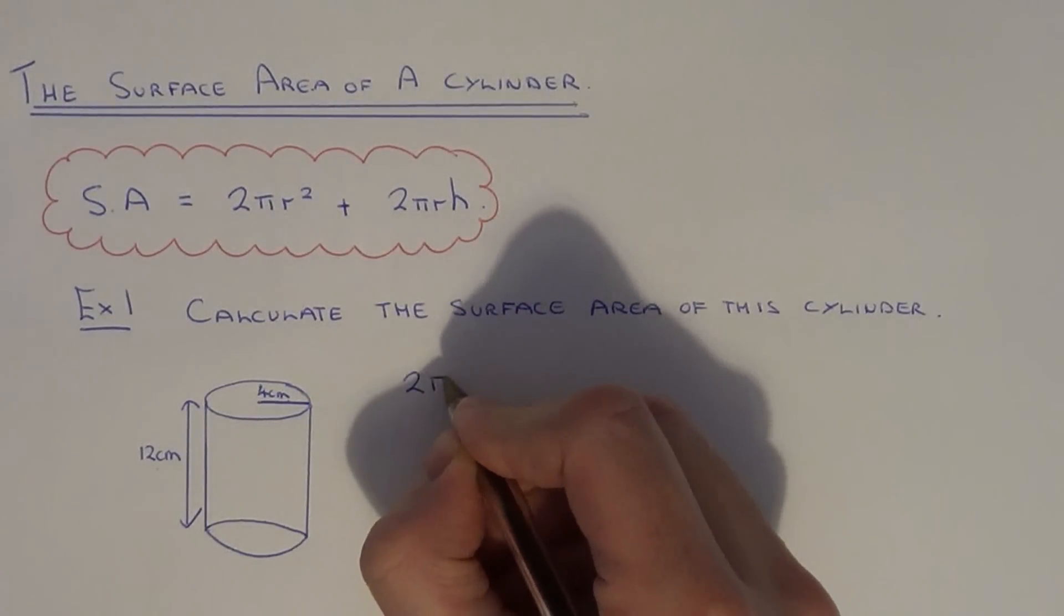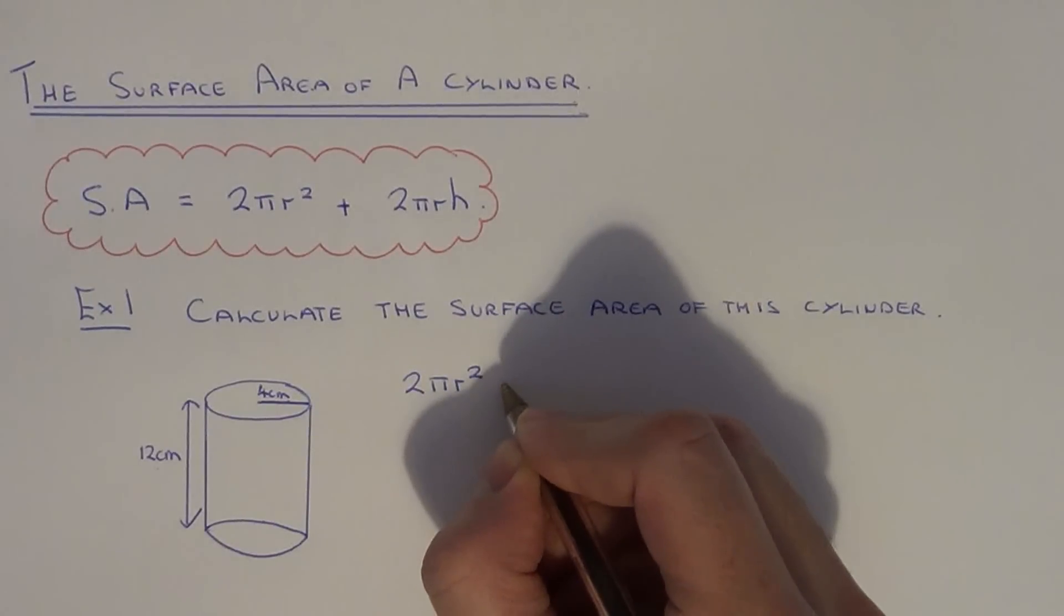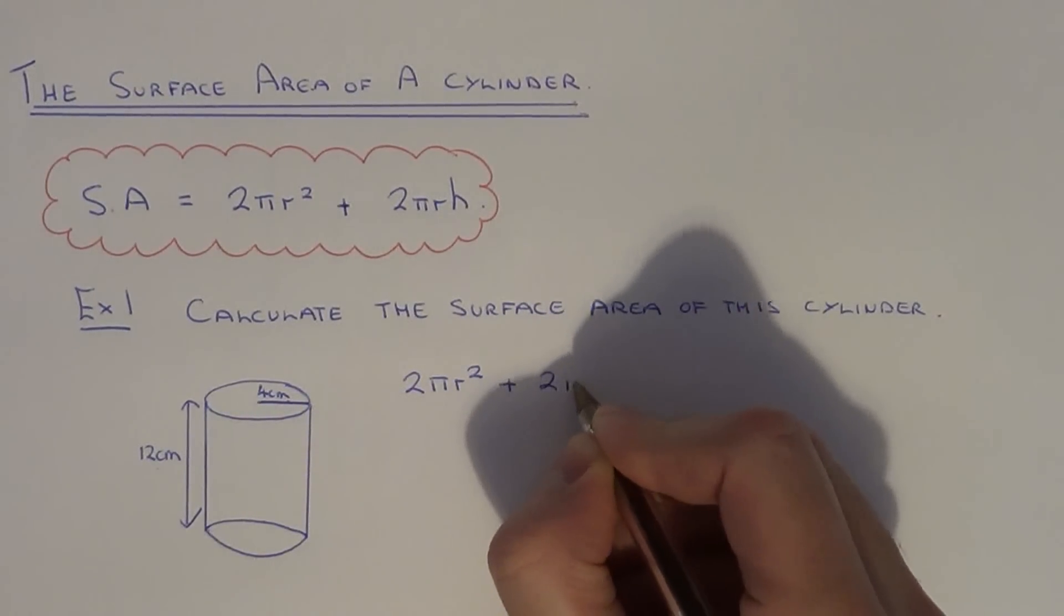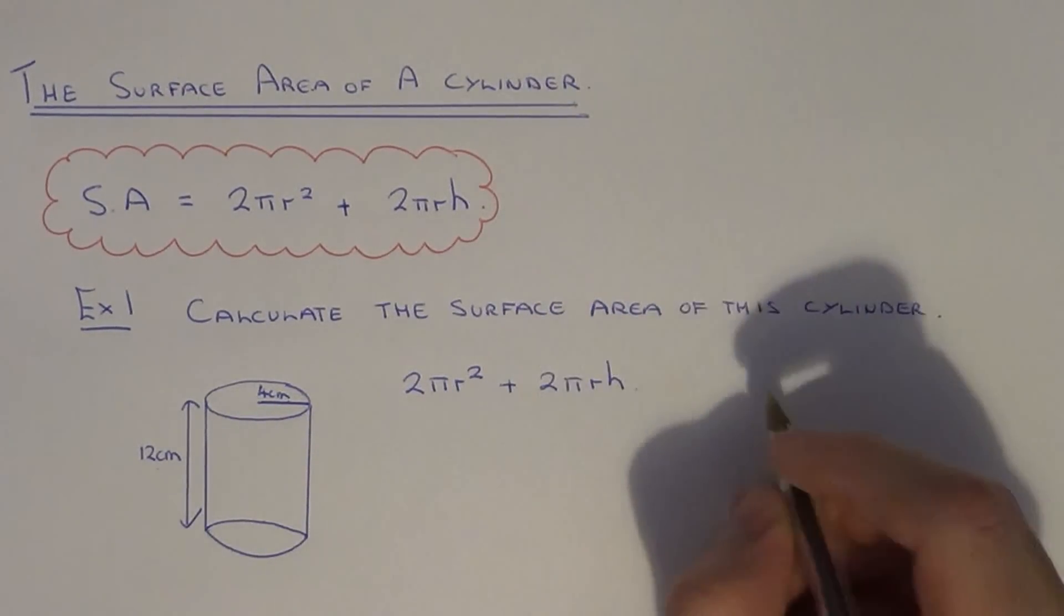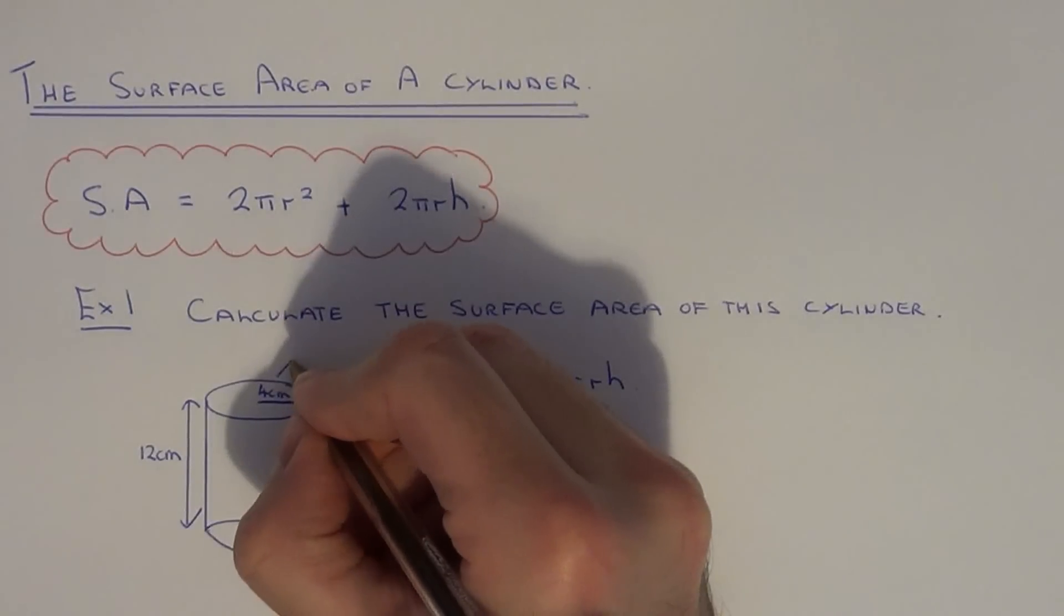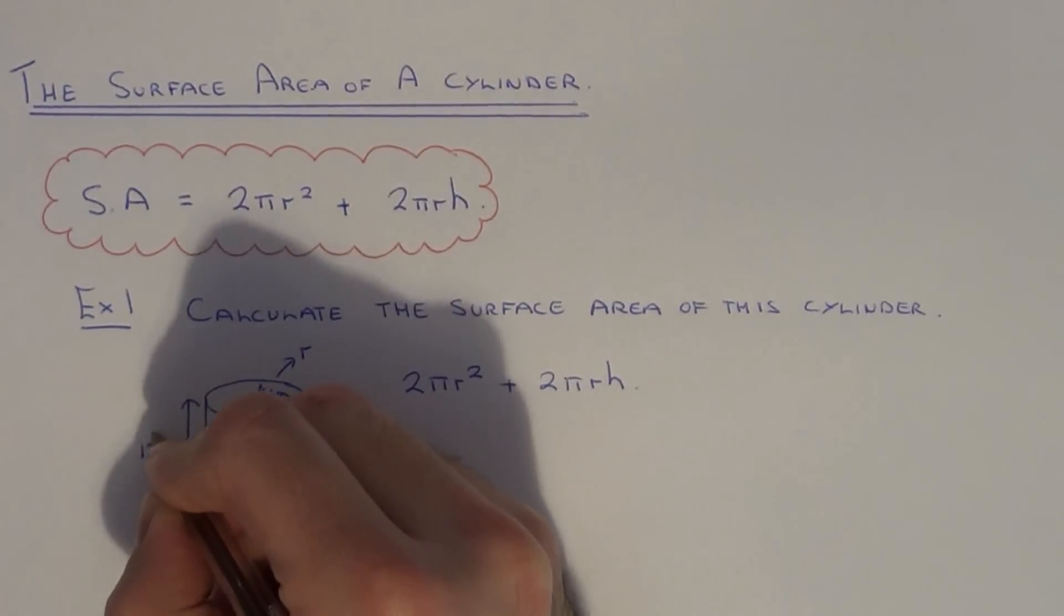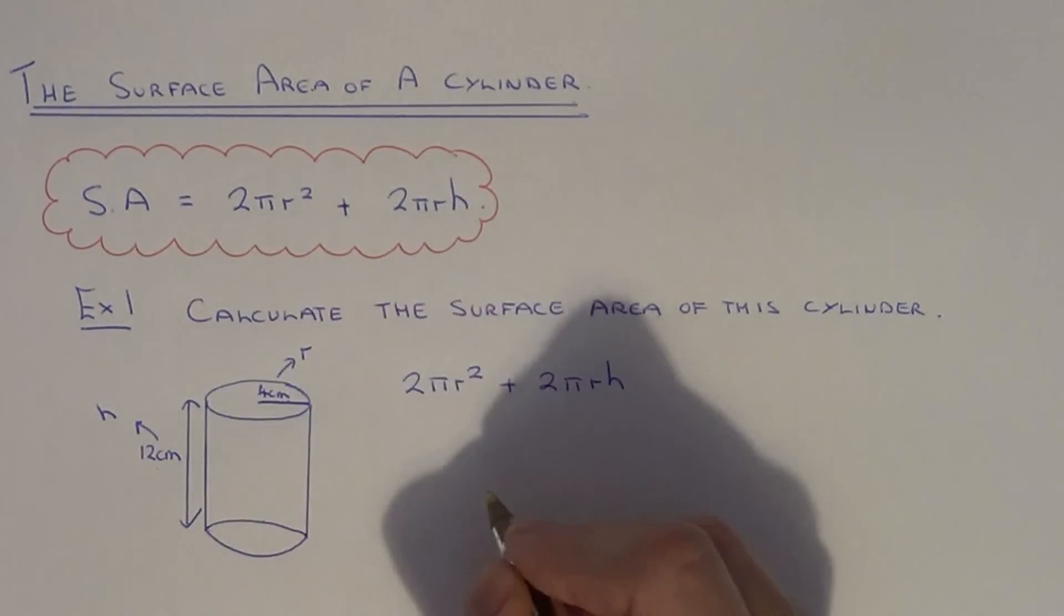So let's just write our formula out: 2πr² plus 2πrh. So remember, the radius is 4 and the height is 12. So if we substitute these values in,